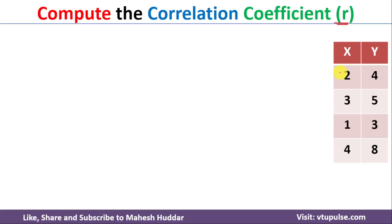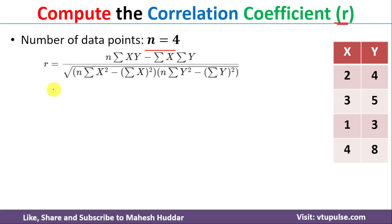In this dataset we have 4 data points, so n = 4. To find the r value we need to use the following equation: r = (n·Σxy − Σx·Σy) / √[(n·Σx² − (Σx)²)(n·Σy² − (Σy)²)]. We need to find the summation of xy, summation of y, summation of x, summation of x², and summation of y².